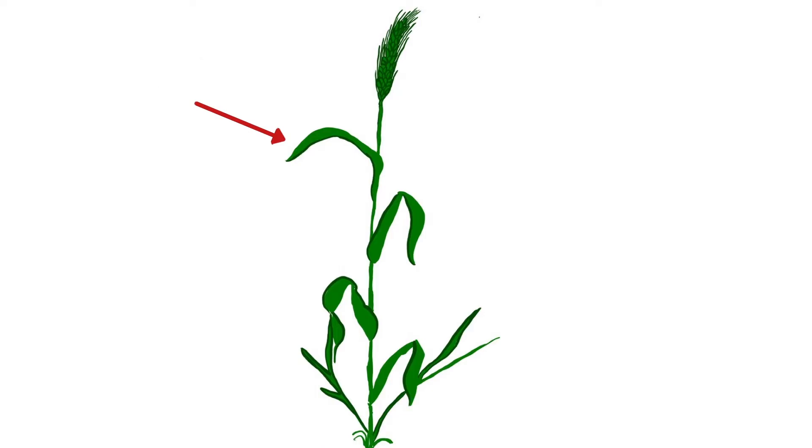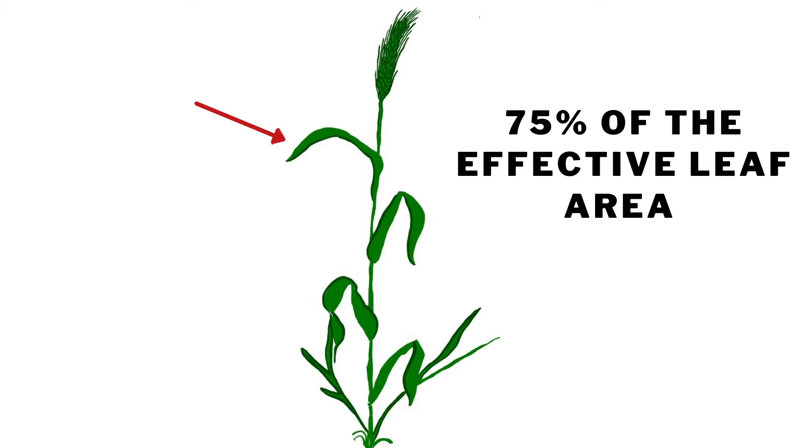The flag leaf is the last leaf to emerge. Like all the other leaves, it produces food and energy. However, the flag leaf is responsible for around 75% of the effective leaf area that will produce the energy that will fill the grain and feed the head of the wheat.